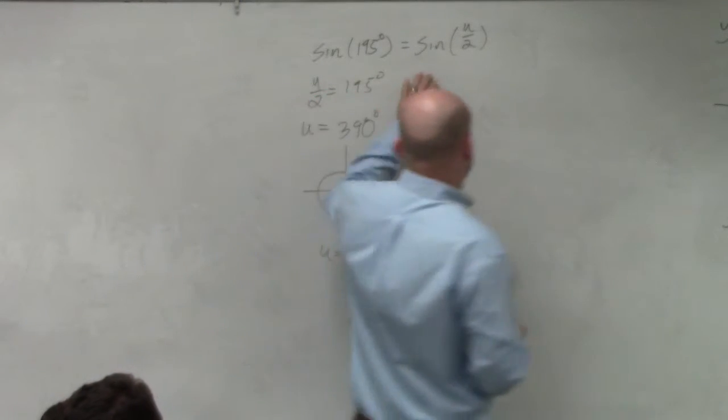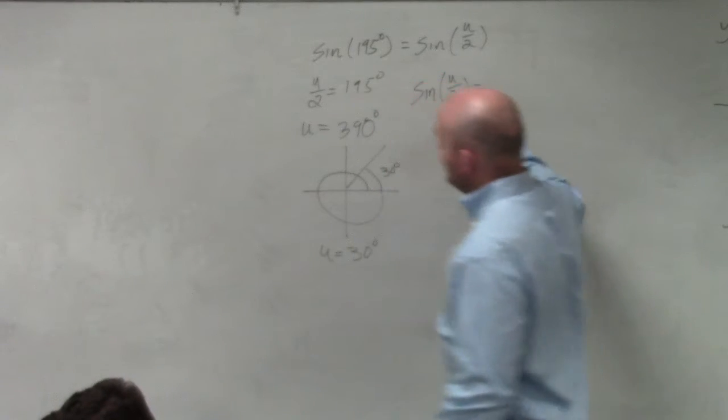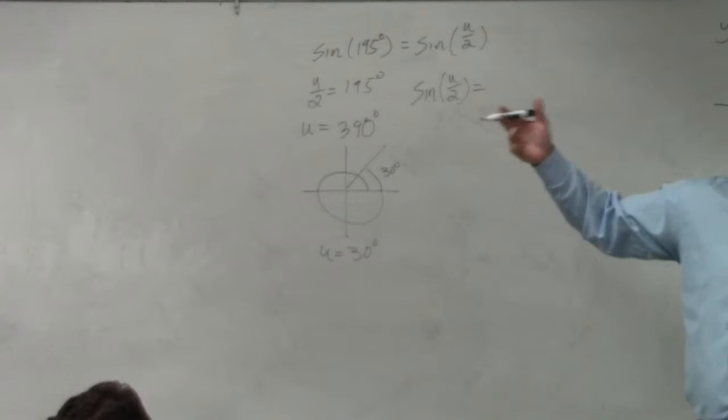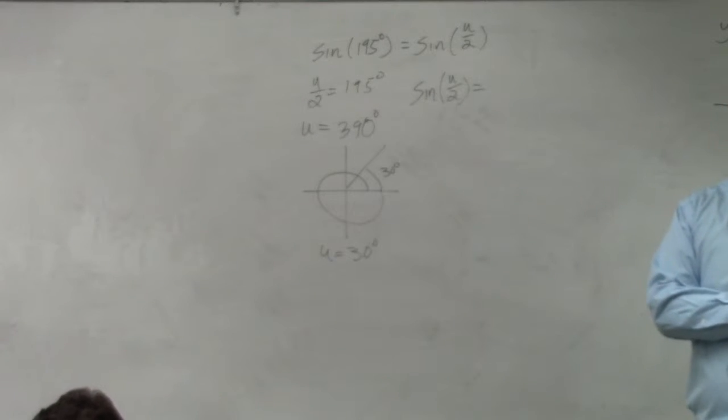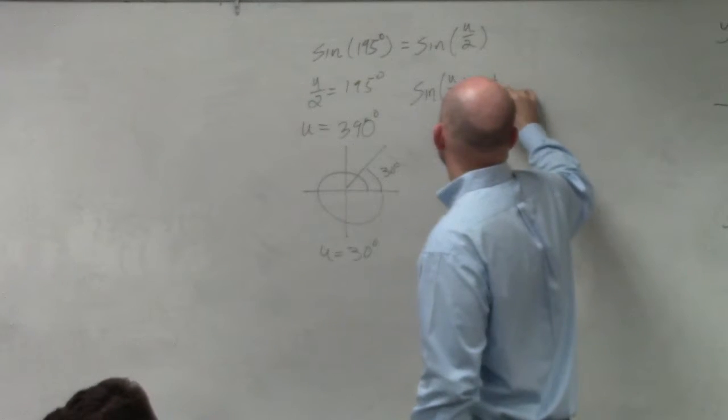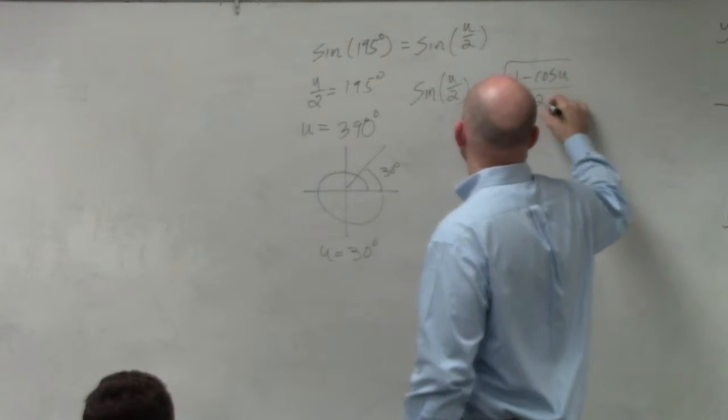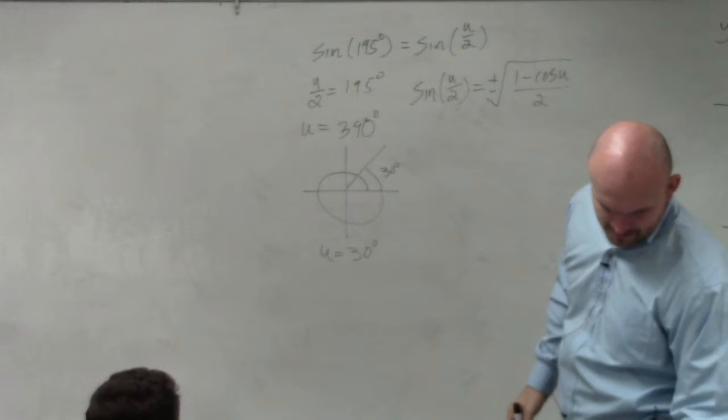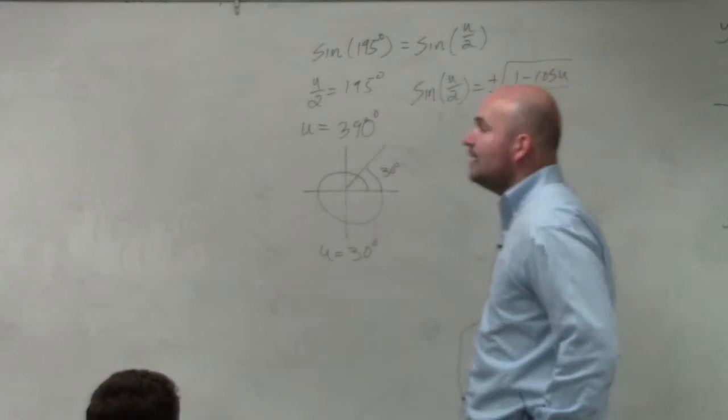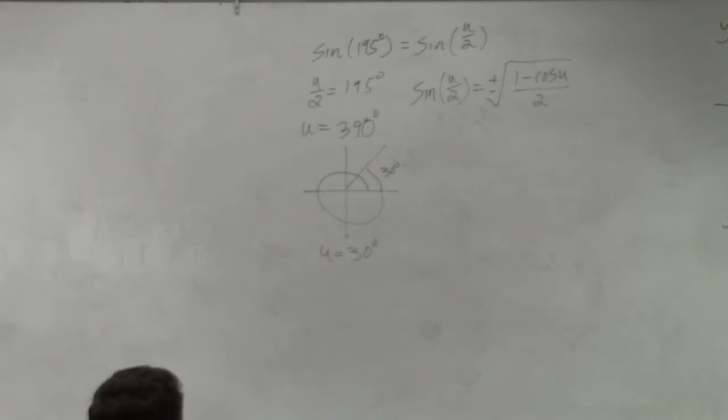If I want to use this half-angle formula to evaluate, I need to use my formula. So it's plus or minus. Is it 1 minus cosine of u divided by 2 for sine? Yes. Okay. Now remember I talked about the plus or minus? Here's where the plus or minus is going to come in.